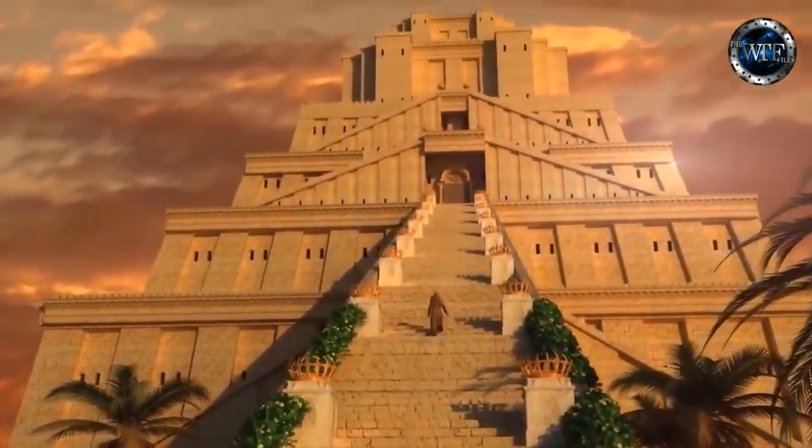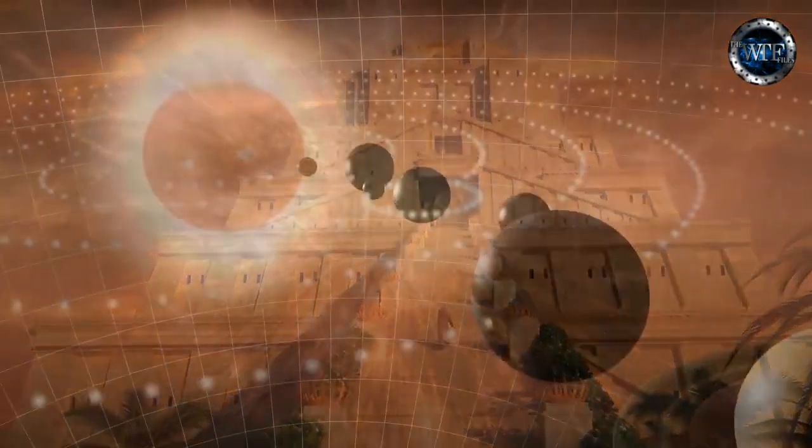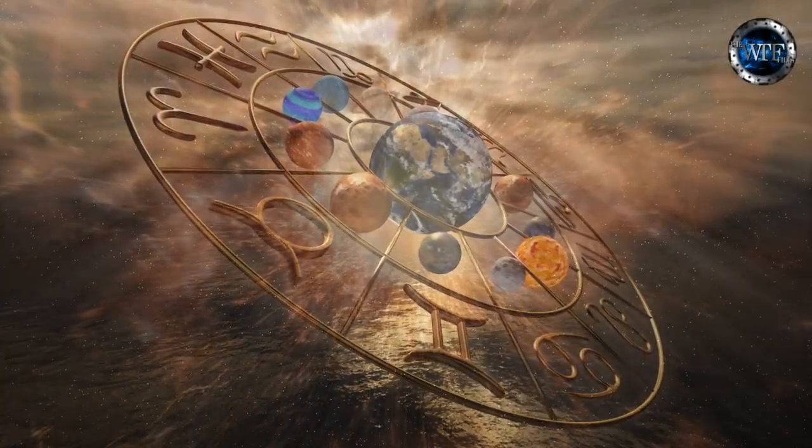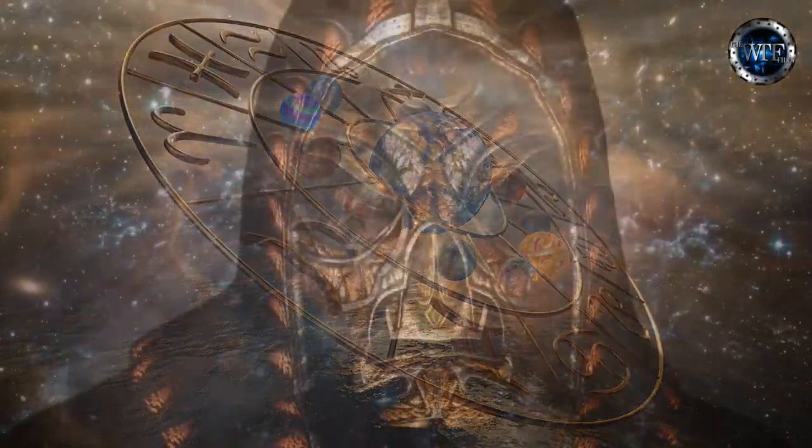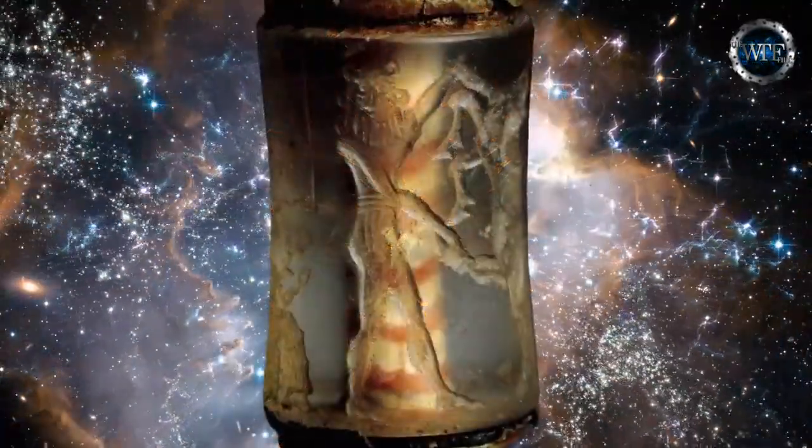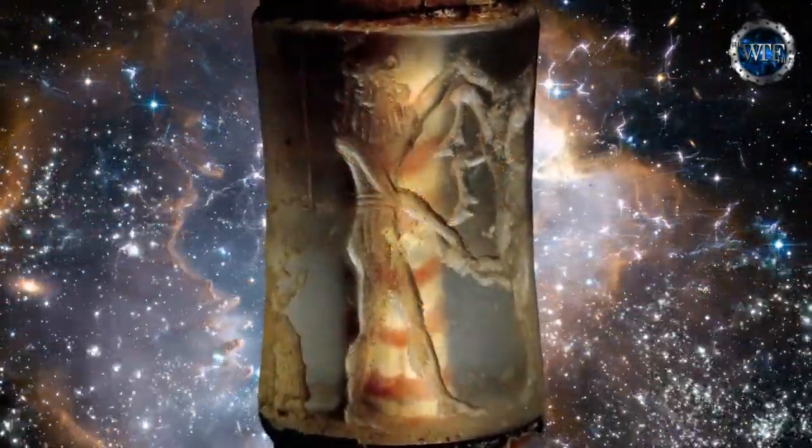In ancient Mesopotamia, the secrets of astronomy and other celestial knowledge are kept carefully guarded, studied behind locked doors by an exclusive society of priest astronomers. Cylinder seals like these are the only surviving record of these carefully guarded secrets.